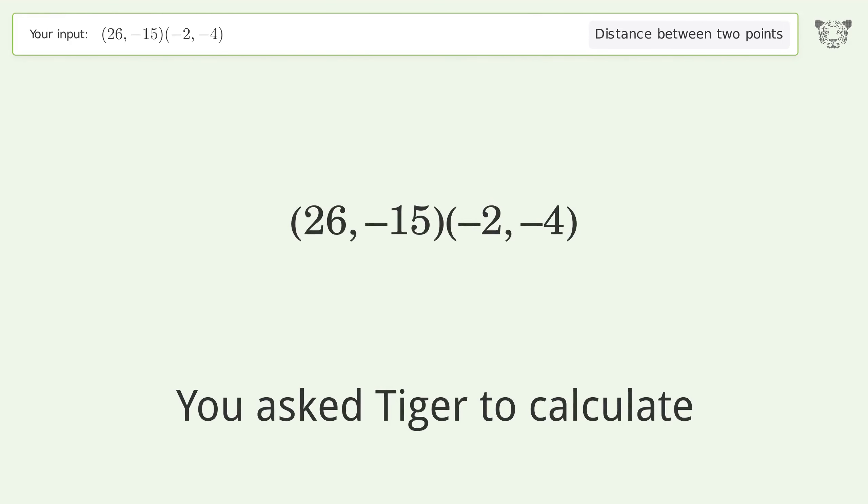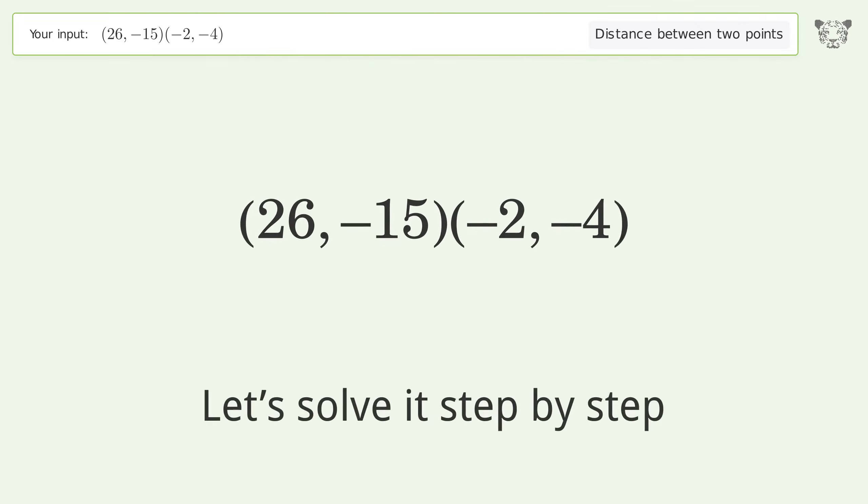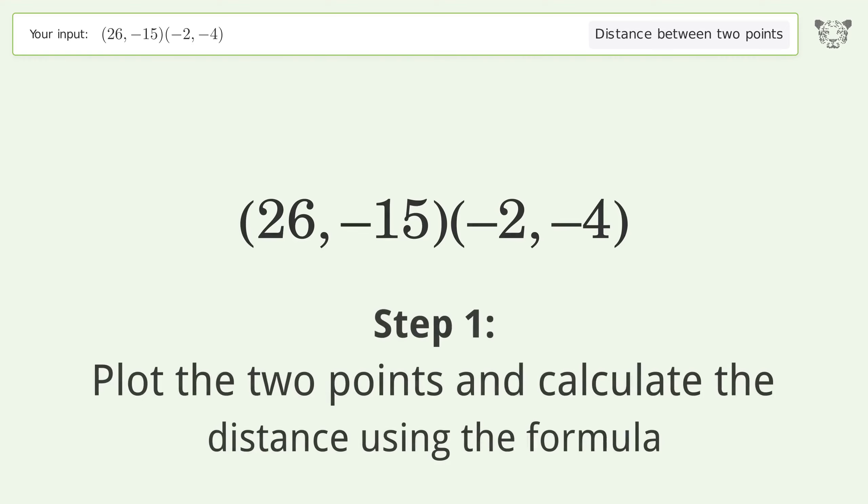You asked to calculate the distance between two points. The distance between the two points is the square root of 905 or 30.083. Let's solve it step by step: plot the two points and calculate the distance using the formula.